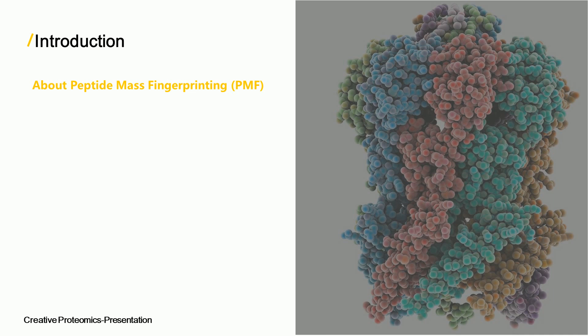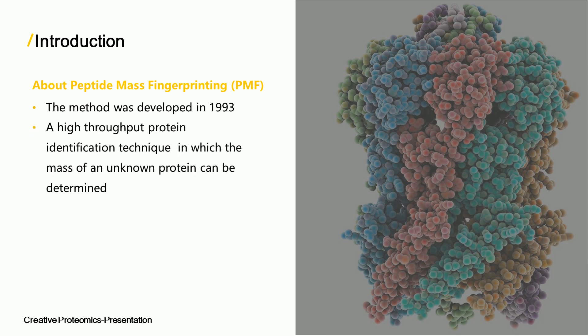Peptide mass fingerprinting, also known as mass fingerprinting, was developed in 1993. It is a high-throughput protein identification technique in which the mass of an unknown protein can be determined. Peptide mass fingerprinting is always performed with MALDI-TOF or electrospray ionization TOF.